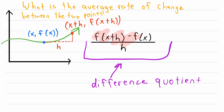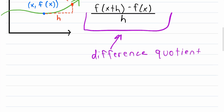So now you know where it comes from. This expression, the difference quotient, tells us the average rate of change of a function from a point x to a point x plus h. Let's take a closer look at the difference quotient by going over some examples.